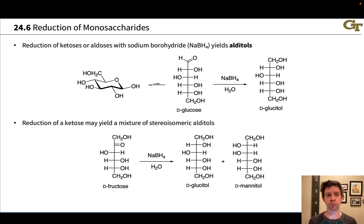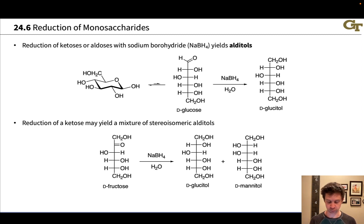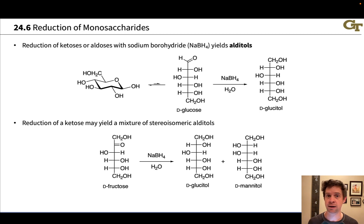We can treat an aldose or a ketose with sodium borohydride to get a reduced product containing a new hydroxyl group and a new alcohol functional group. We already know that sodium borohydride reduces ketones and aldehydes to secondary and primary alcohols. The exact same reaction can occur in carbohydrates via the open chain form.